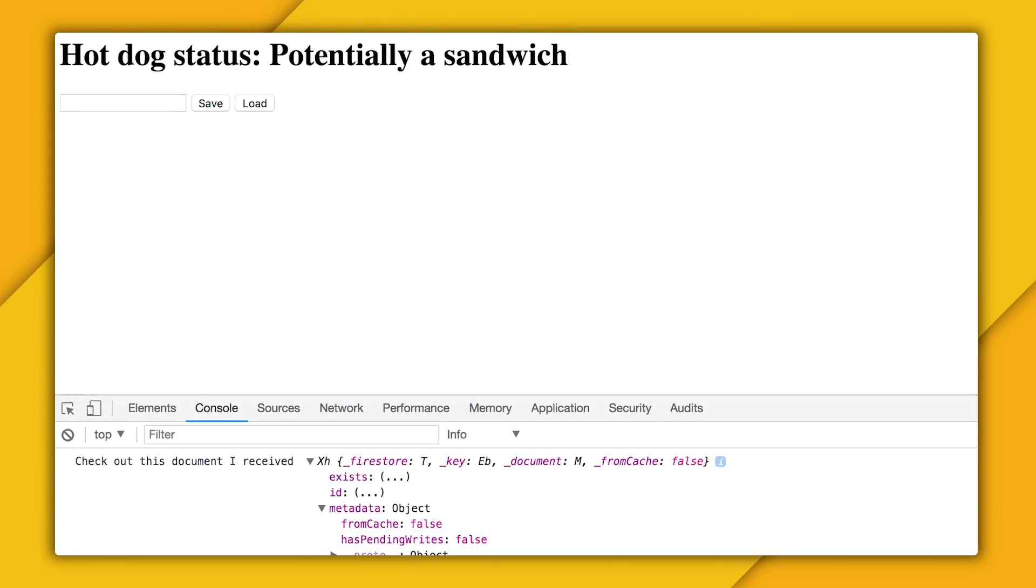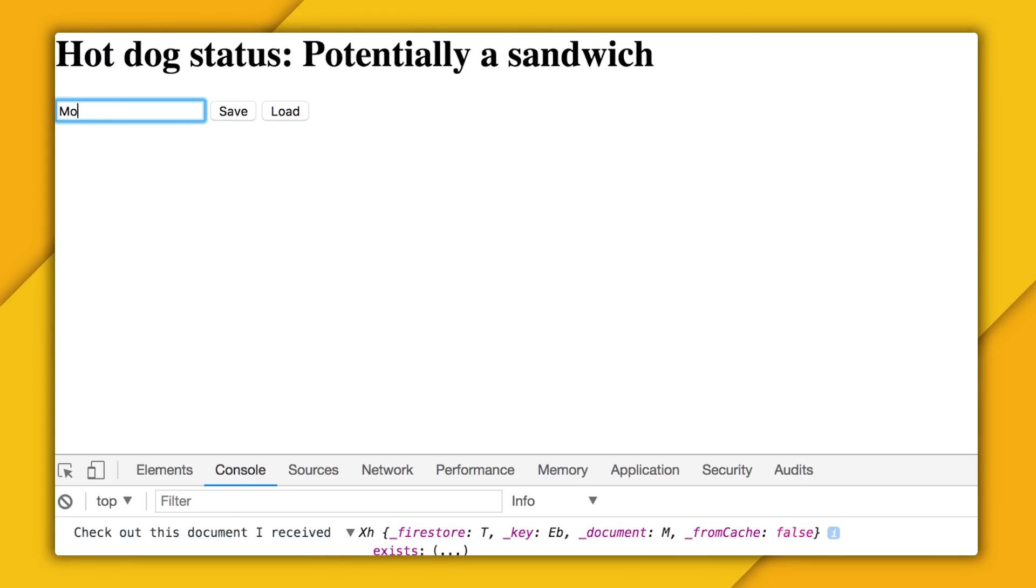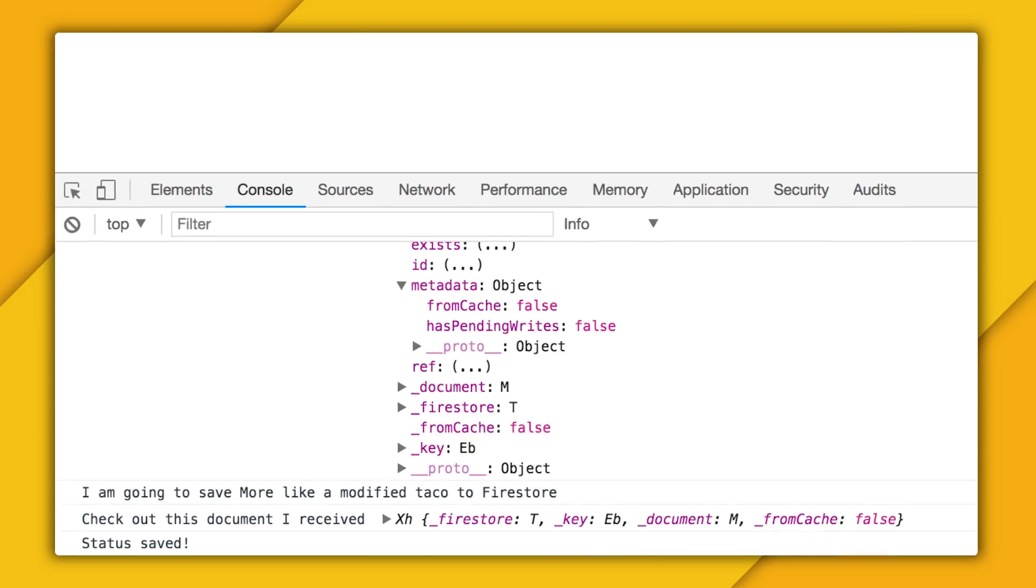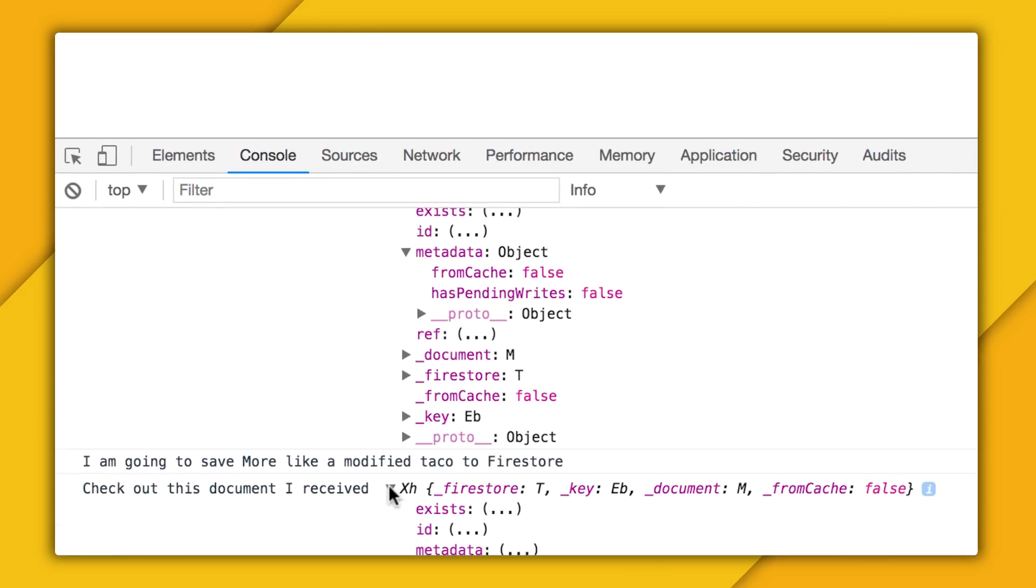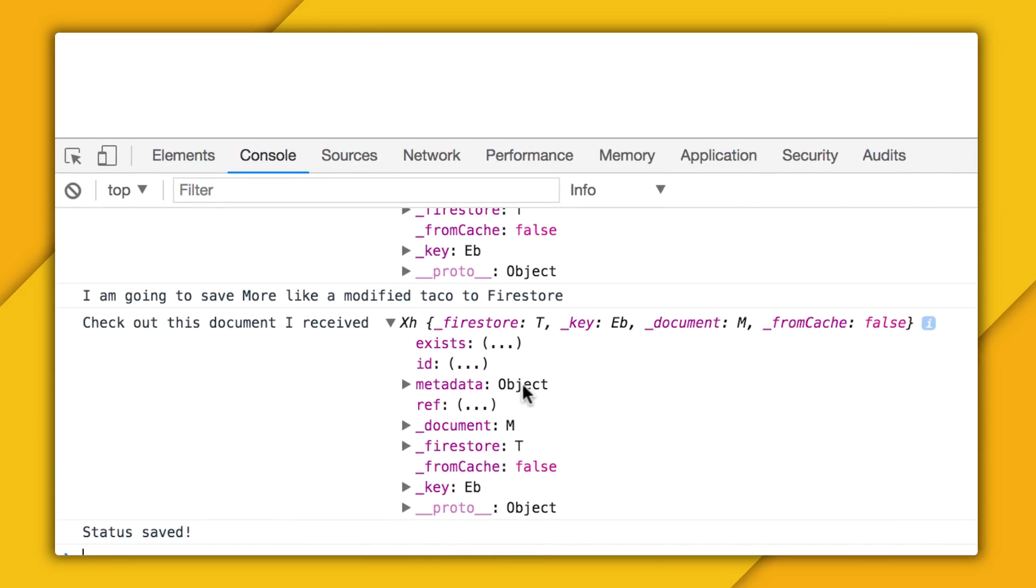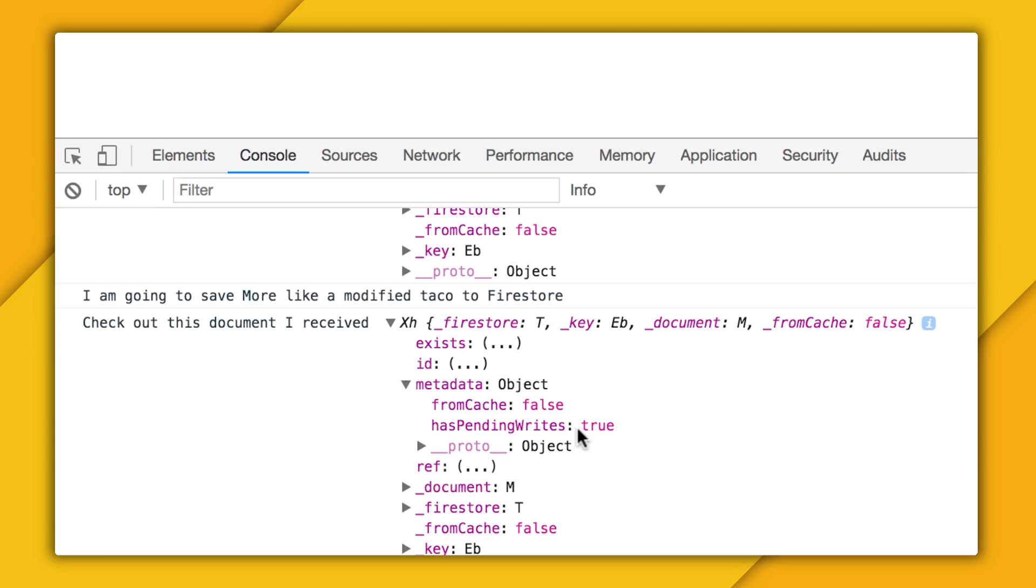So now let's save our data. Let me write more like a modified taco, potentially offending millions of taco lovers. Sorry. Now when I save it, the object that gets returned in my OnSnapshot listener has pending writes set to true, meaning that this is the local version of the data in my database that's waiting to be written.